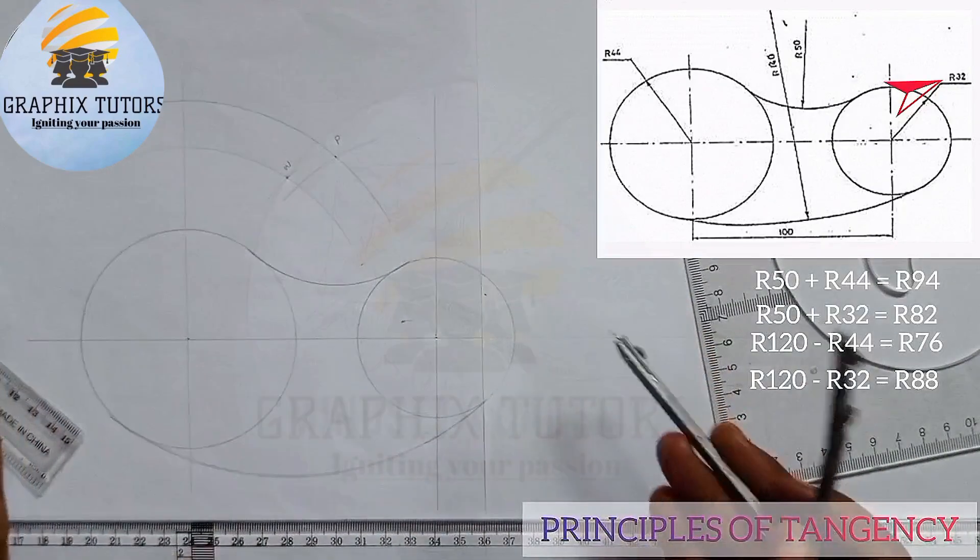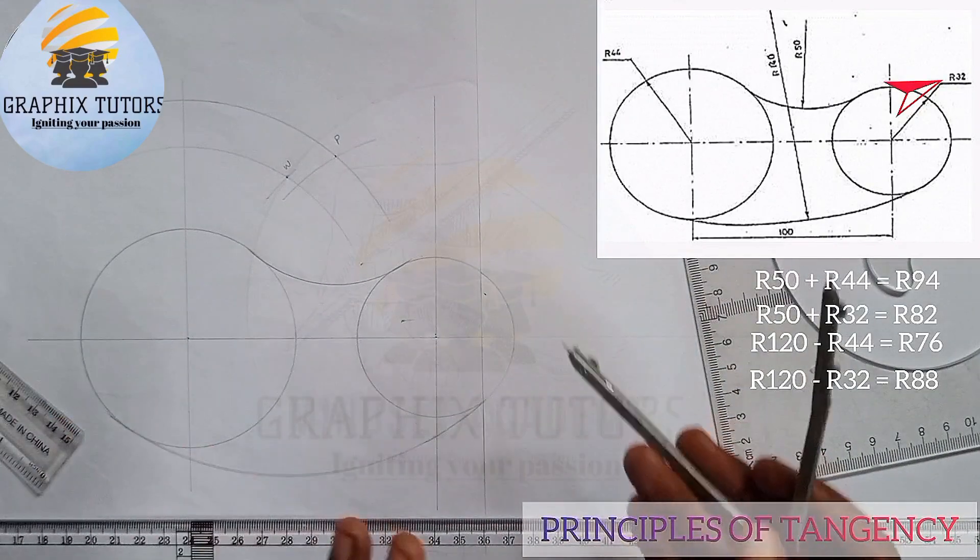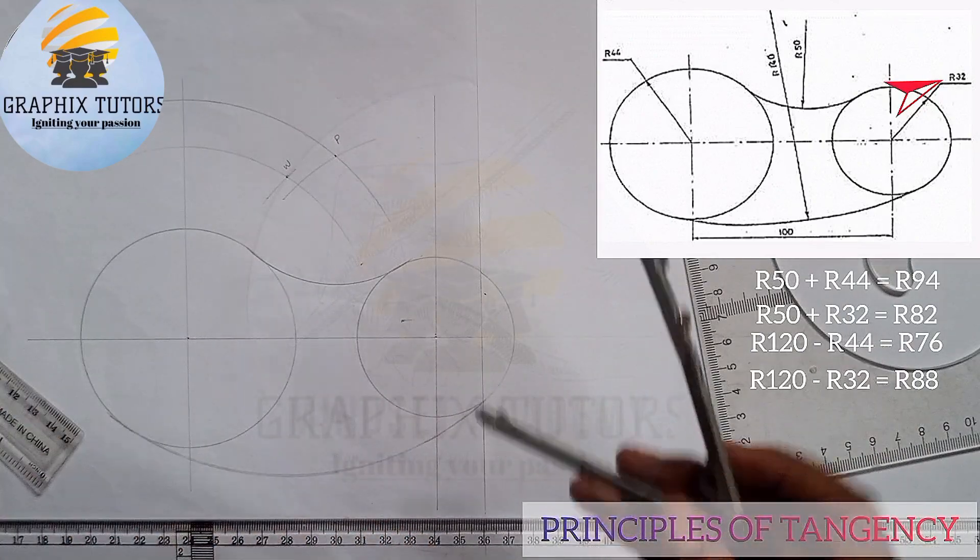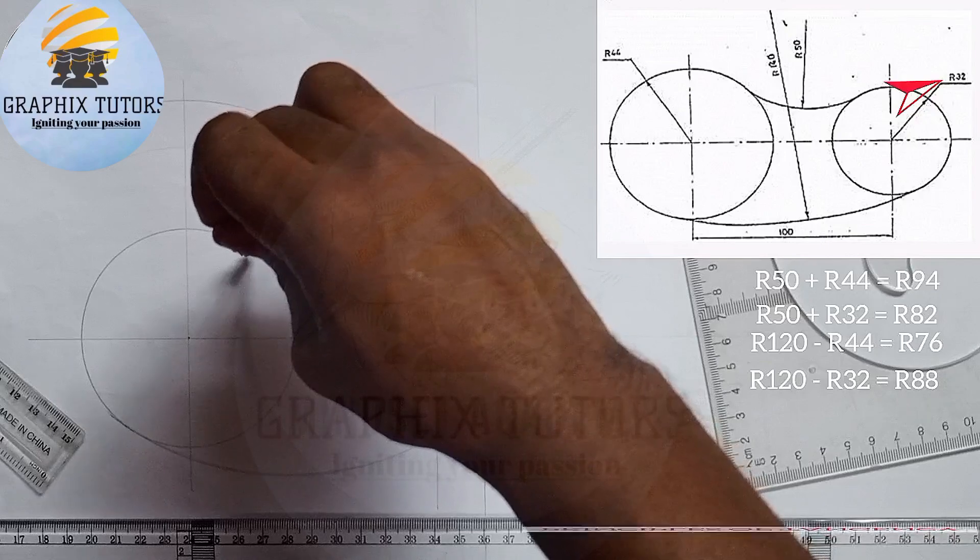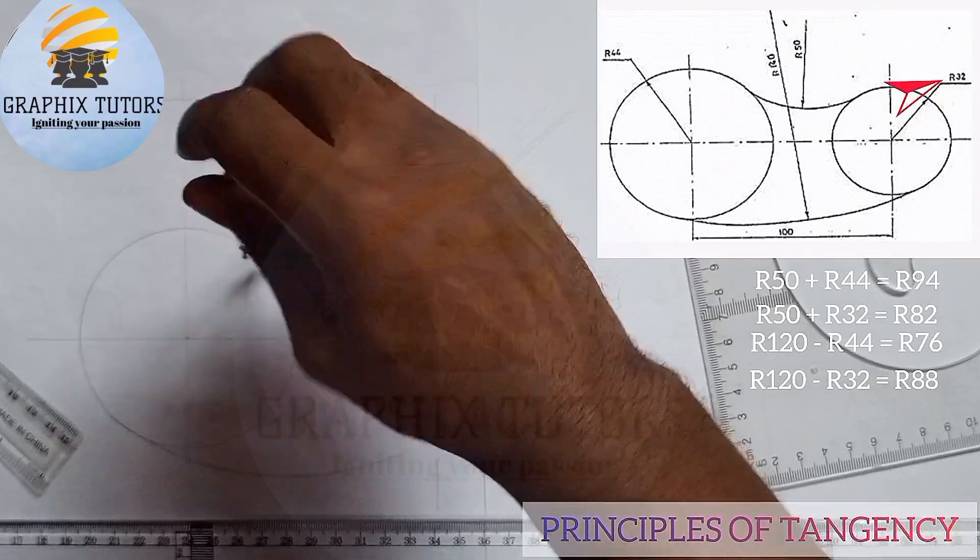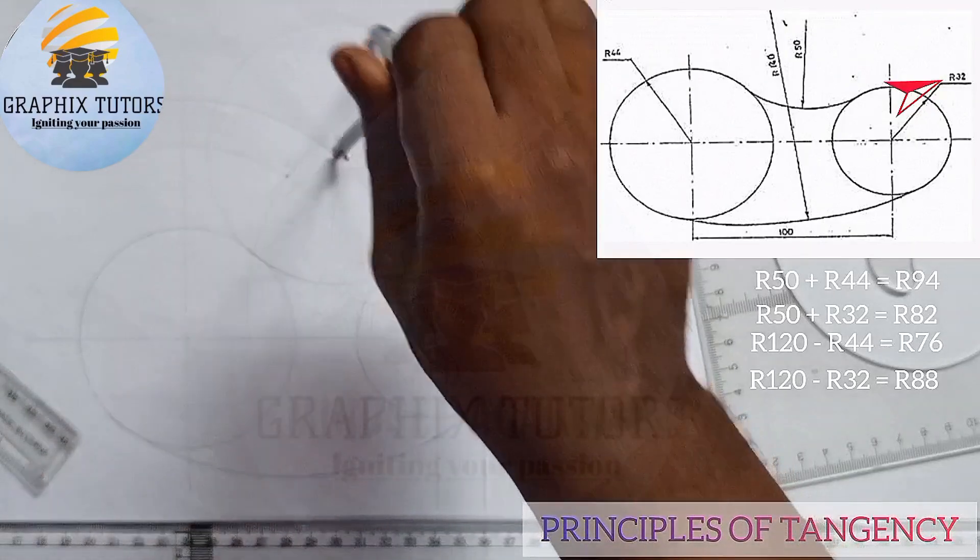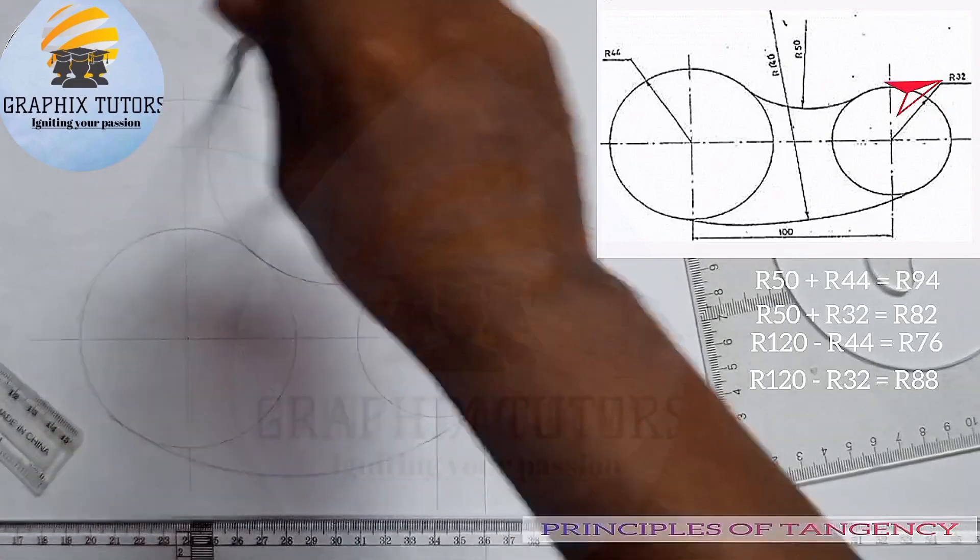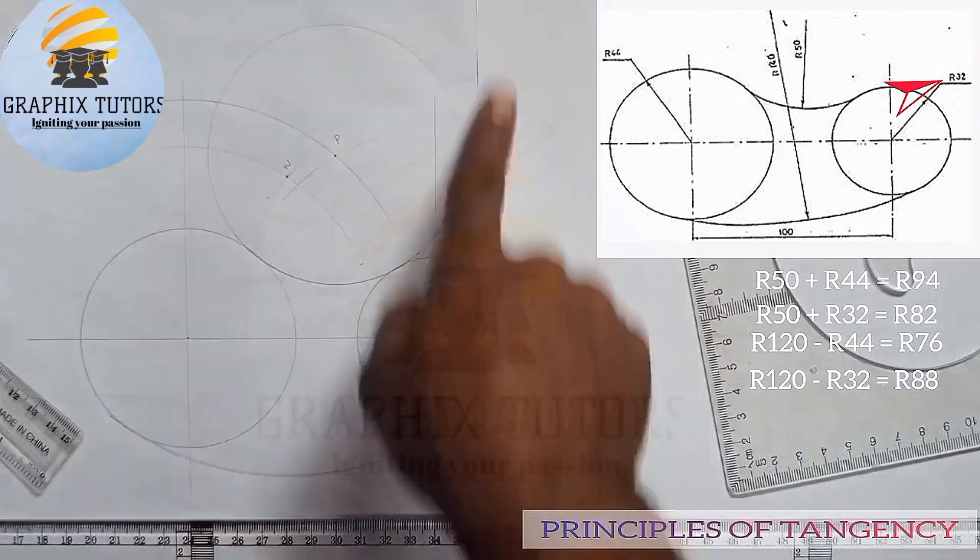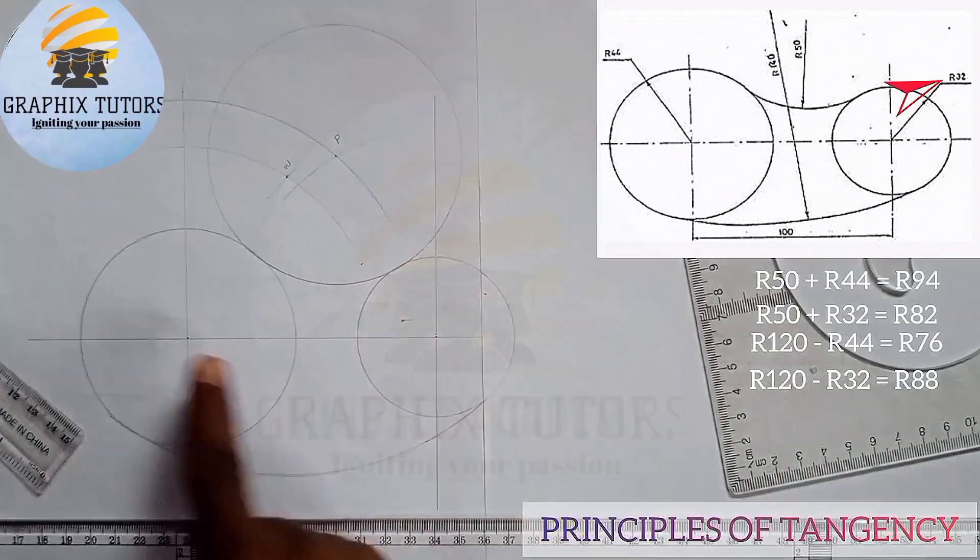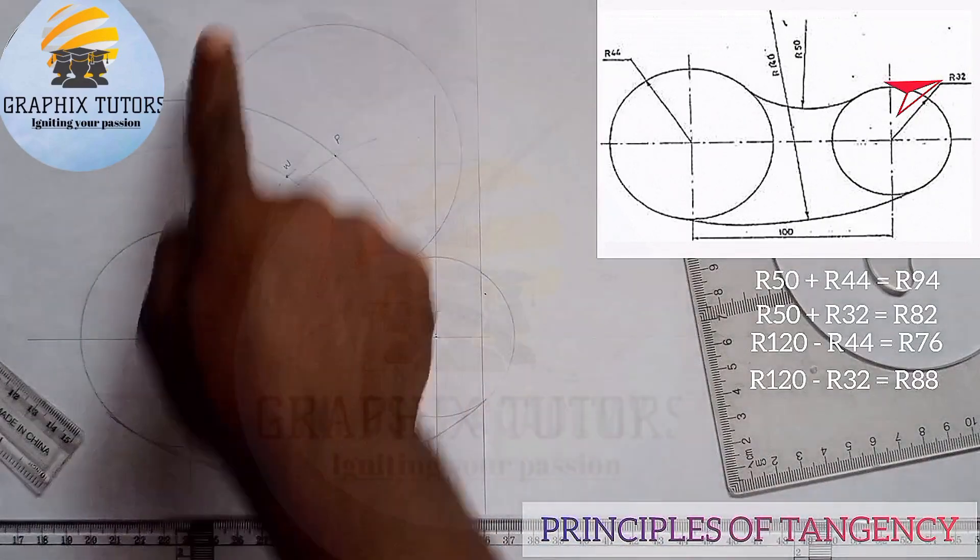We are done with our diagram here, but to explain to you what external and internal is: if I should complete this circle here this way, this is a bigger circle. Can you see that? These two circles we are considering are external to this circle.